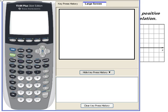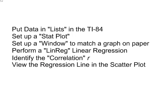Hello friends, we're podcasting for anyone interested in learning how to make a least squares regression line, that is to do a linear regression on a graphing calculator. In this podcast, we will do the following things. We'll learn how to put data in lists, we'll set up a stat plot, we'll set up a window on the calculator to match any graph you have on paper, we'll perform the linear regression, we'll be able to identify the correlation value r, and then we'll view the regression line with the scatter plot on the calculator.